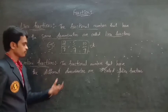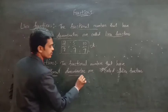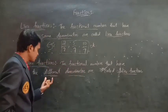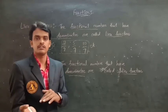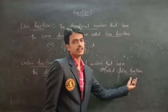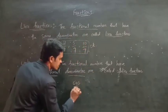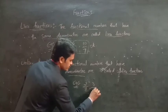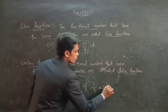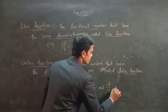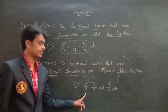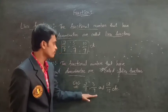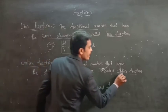Next, unlike fractions. The fractional numbers that have different denominators are called unlike fractions. The denominators are different. Such type of fractions are called unlike fractions. Examples of unlike fractions: 2 by 8, 3 by 9, and 12 by 15. Here the denominators are different. Such type of fractional numbers are called unlike fractions.